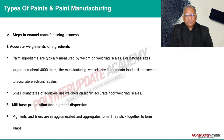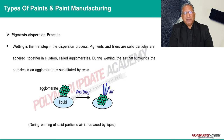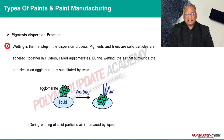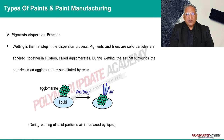Steps in the enamel manufacturing process: accurate weighing of ingredients, then mill base preparation and pigment dispersion. Wetting is the first step in the dispersion process. Pigments and fillers are solid particles glued together in clusters called agglomerates. During wetting, the air surrounding particles in an agglomerate is substituted by resin.